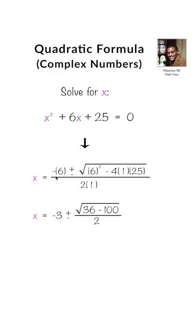So we get x equals negative 6 divided by 2, which is negative 3, plus or minus the square root of 36 minus 100 divided by 2.